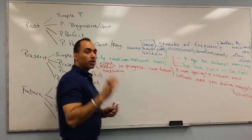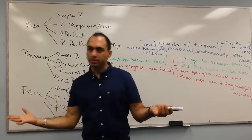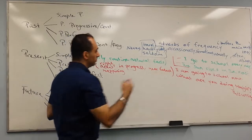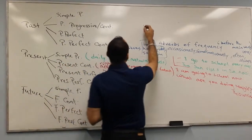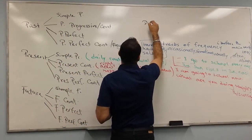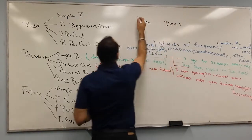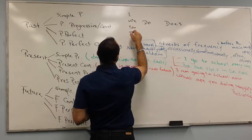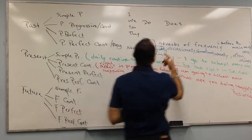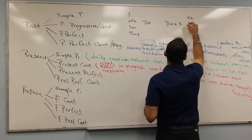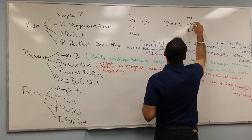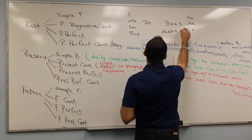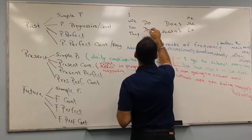So one thing to remember for the routine is adverbs of frequency. One thing to remember is do and does. Of course we use do for I, you, we, they, and does for he, she, and it. So what's the negative? Doesn't or does not, and don't or do not.